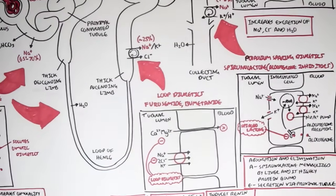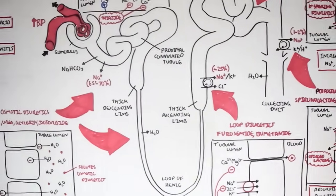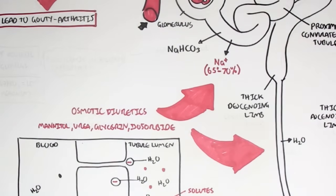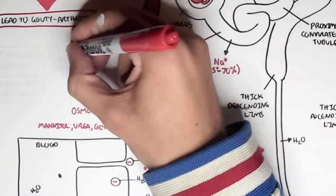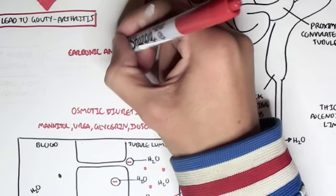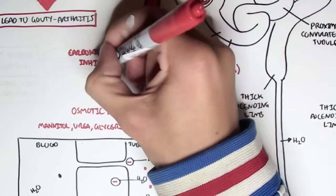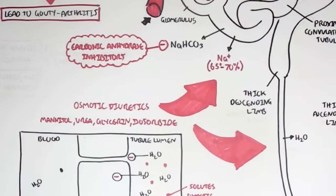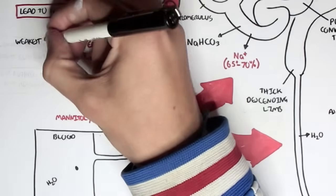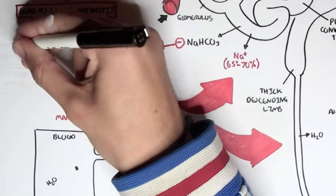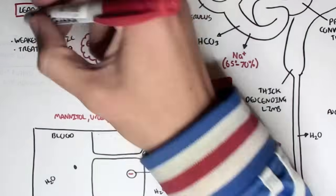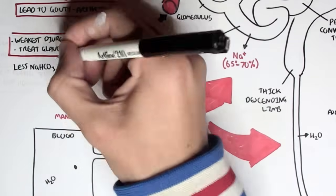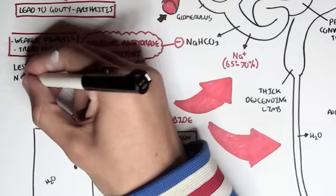Finally, there is another type of diuretic — the carbonic anhydrase inhibitors, which are the weakest diuretics. They work at the proximal convoluted tubules and prevent the reabsorption of sodium bicarbonate. They are used to treat glaucoma, for example. By preventing the reabsorption of sodium bicarbonate, less sodium is reabsorbed, and therefore blood pressure is decreased.